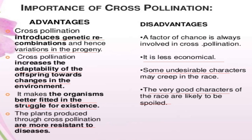Cross pollination makes the organism better fitted in the struggle for existence, and plants produced through cross pollination are more resistant to diseases. Disadvantages include: it is less economical, some undesirable characters may creep into the race, and very good characters of the race are likely to be spoiled.